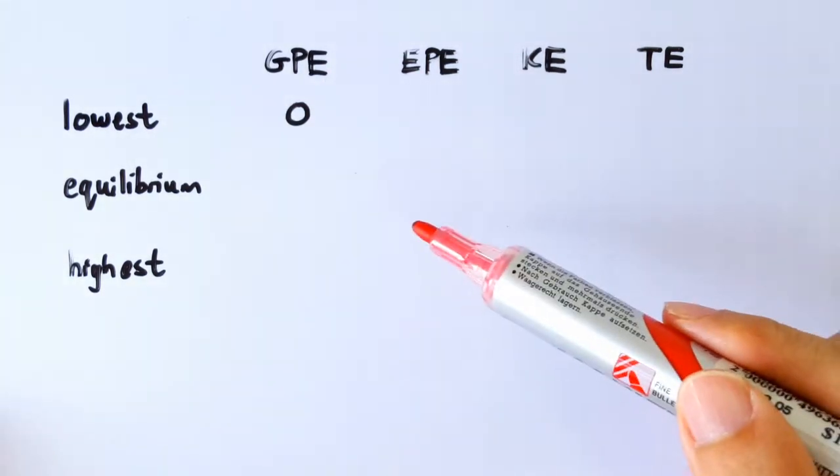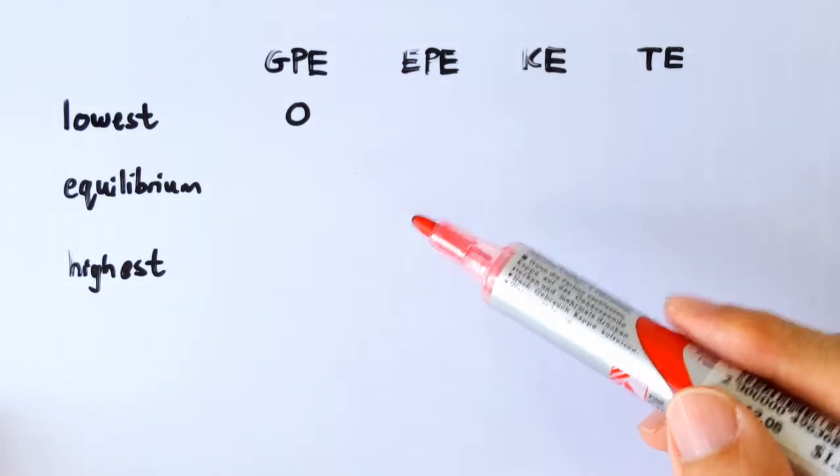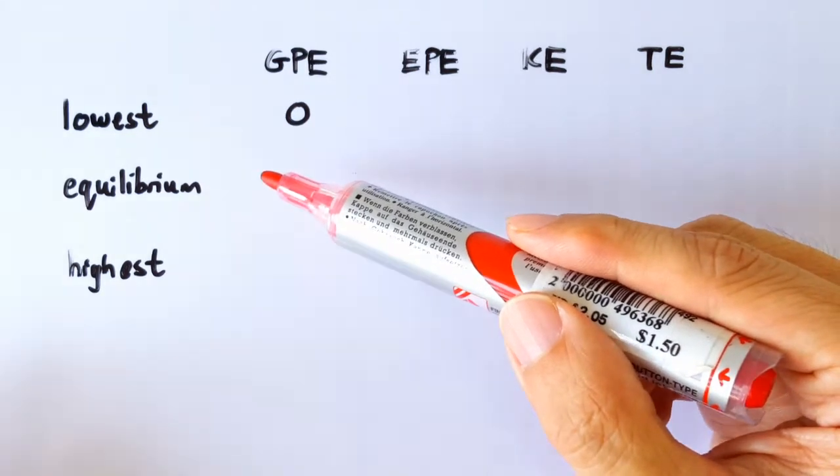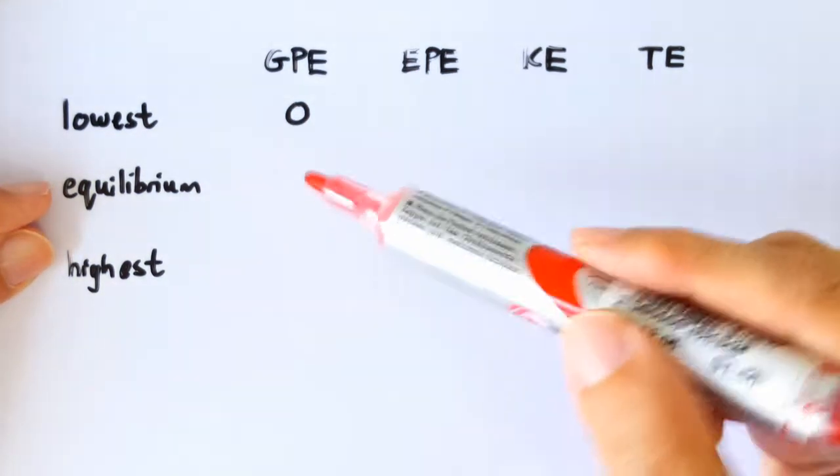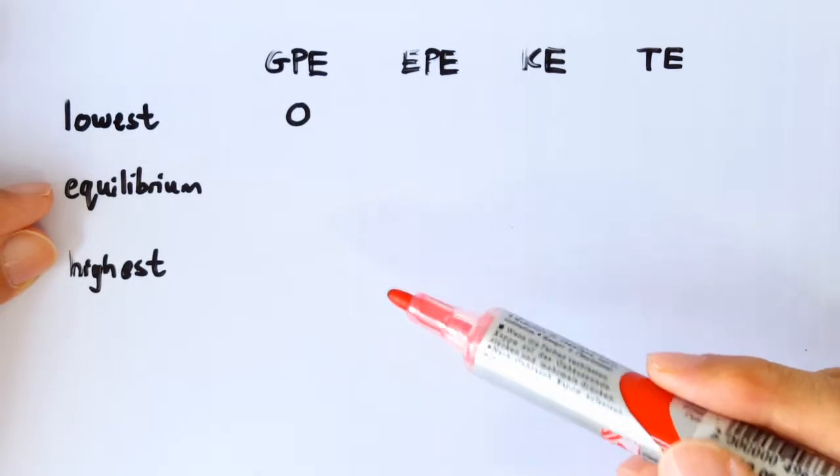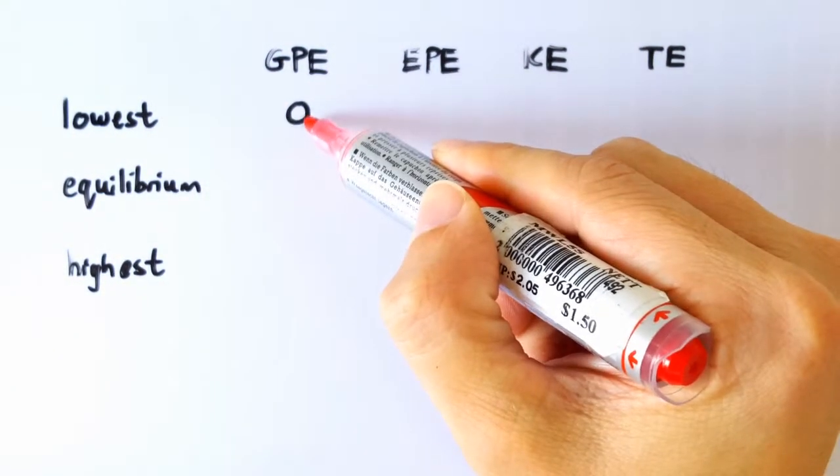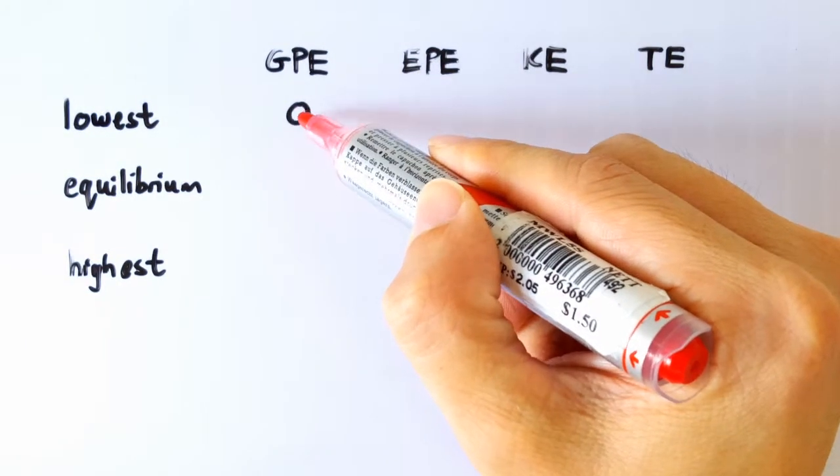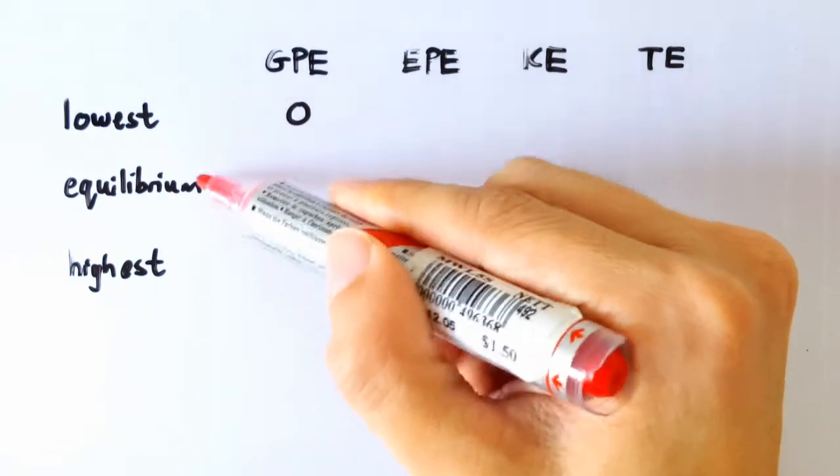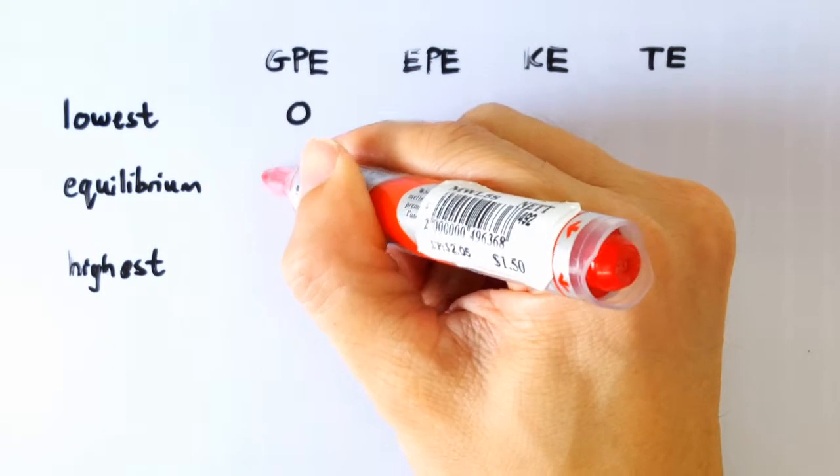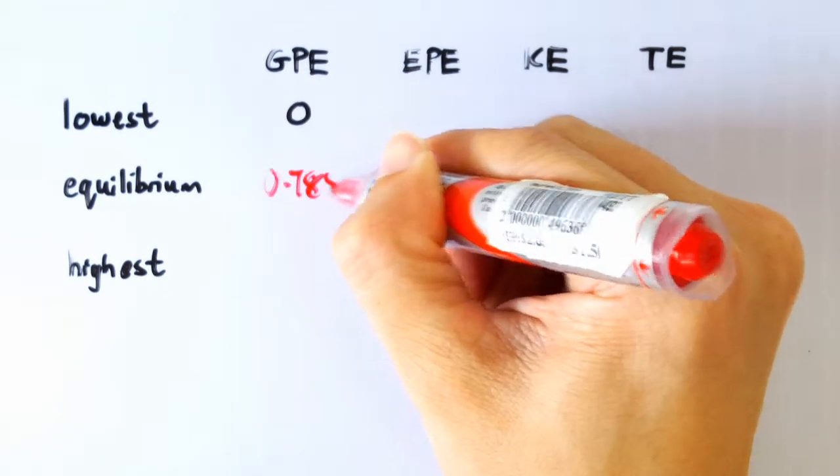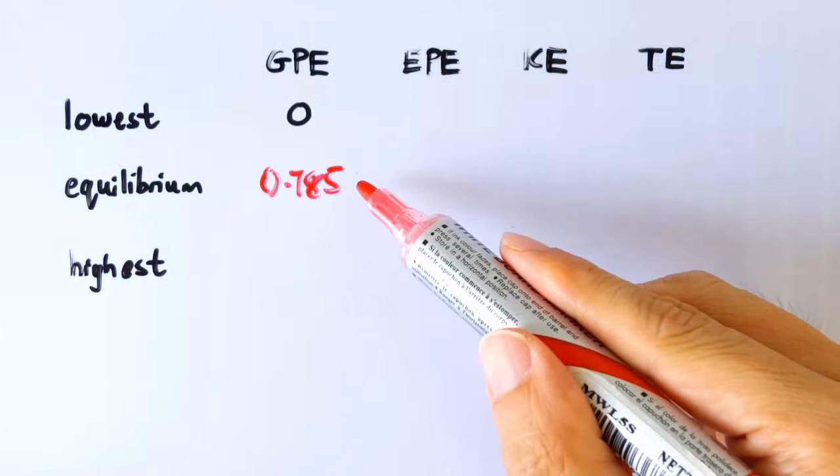In part B1 we have already figured out that whenever we lose the height of going from here to here, the GPE changes by 0.785. So we have made the lowest point the reference point, so zero GPE here. So when we make this distance, we know that the GPE must increase by this much. This is the number that we calculated in part B1.